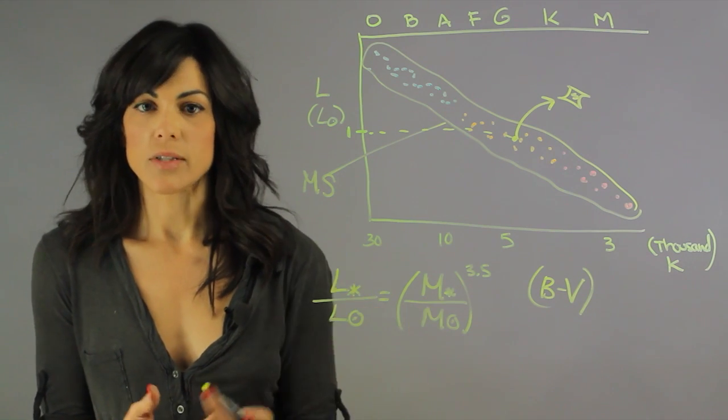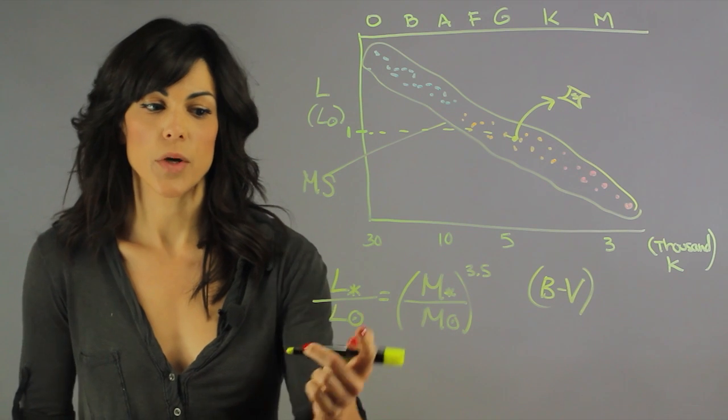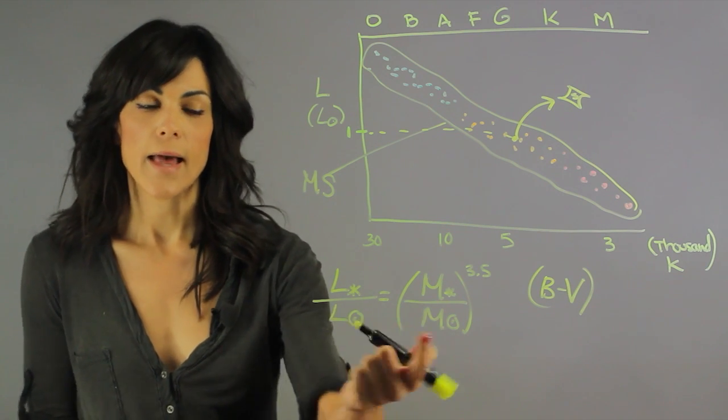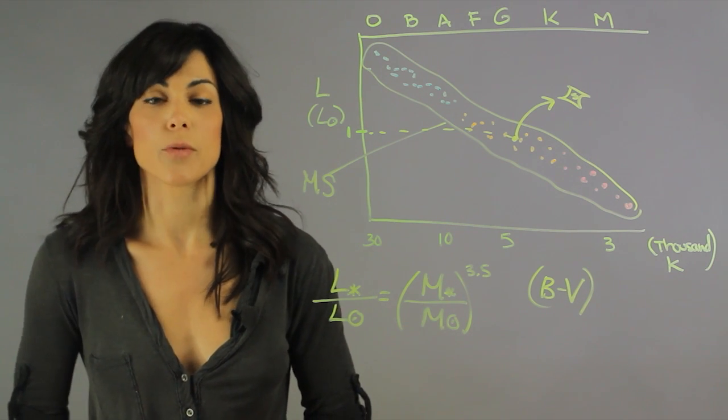And plugging it into this equation, it will give you the actual mass of the star, since we already know the luminosity of the sun and the mass of the sun. And this is how we determine the mass of stars.